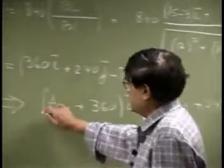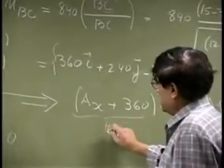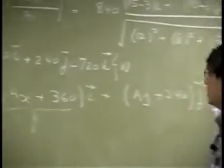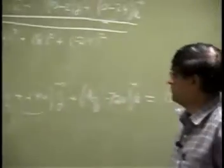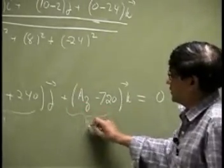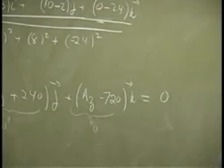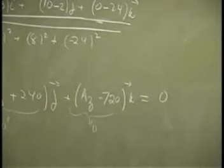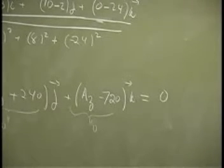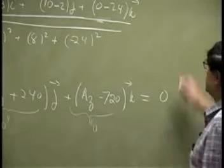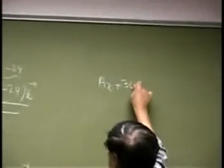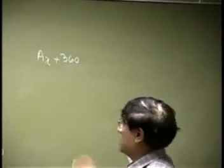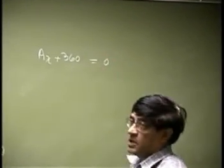Now, for that equation to be 0, this whole thing should add up to 0, this whole thing should add up to 0, and this whole thing should add up to 0. So, now one equation, which is in vectors, really gives you three more equations. The first equation is AX plus 360, and that adds up to 0.